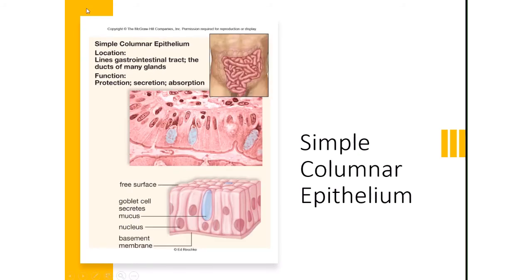Simple columnar epithelium is a single layer of rectangular cells, also responsible for secretion and absorption, with slightly better protection because they are bigger than cuboidal cells. You will find them in your GI tract as well as the ducts of many glands.